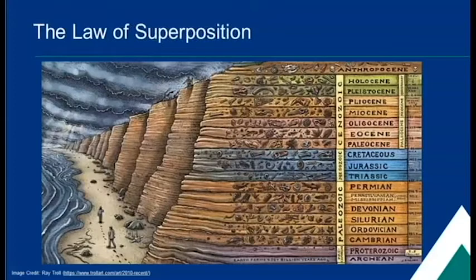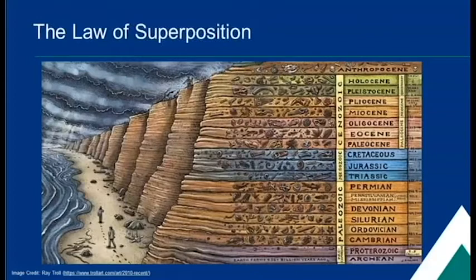Each different layer of rock was formed under different circumstances and represents a different part of Earth's history. Think of making a layered vanilla and chocolate cake. Each layer, including the frosting, comes from a different mix and is different from the layers above and below it. A famous geoscientist named Nicholas Steno came up with something called the law of superposition to describe the relationships between different layers of rock. As long as nothing has happened to disturb the rock layers, we usually find the oldest rocks on the bottom and the youngest rocks on top.